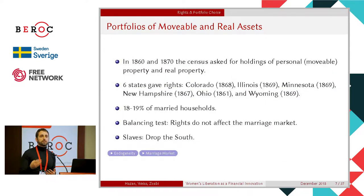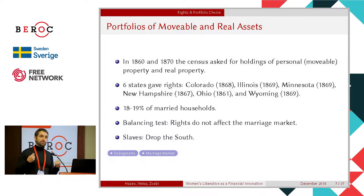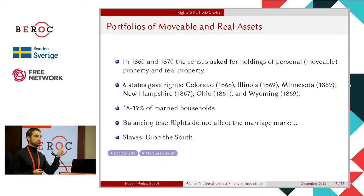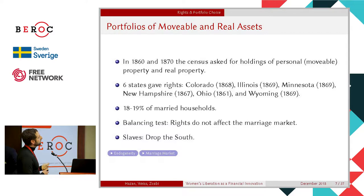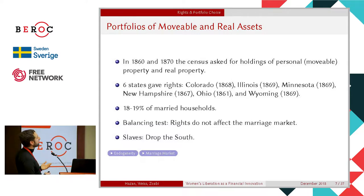The first analysis I'm going to do is try to convince you that after property rights are granted, people really changed their portfolios. Fortunately for us, in 1860 and 1870 the census asked about individual holdings of personal property and real property — unfortunately it was only asked in these two years. Between 1860 and 1870, six states gave women property rights. Some were small — Colorado and Wyoming had very few inhabitants — but some were quite large, like Ohio. These states represent about 20% of married households at the time.